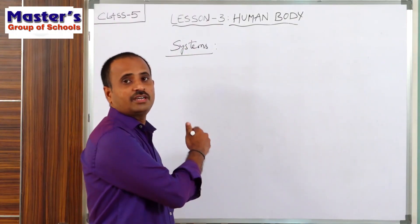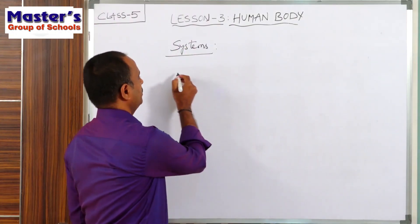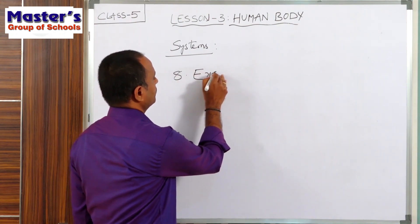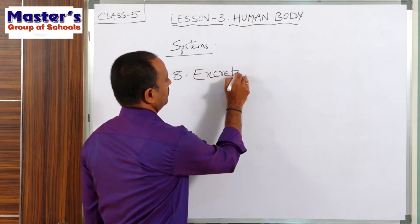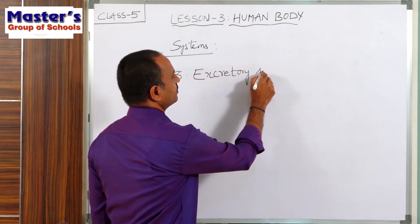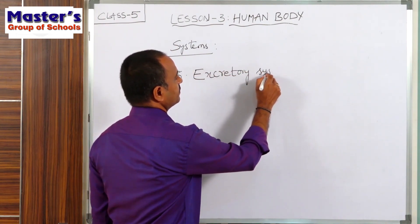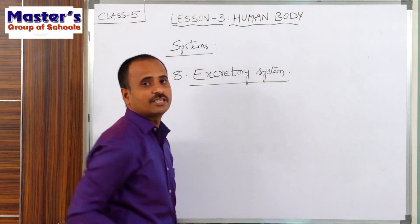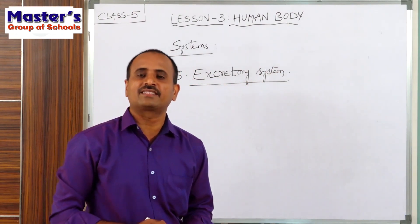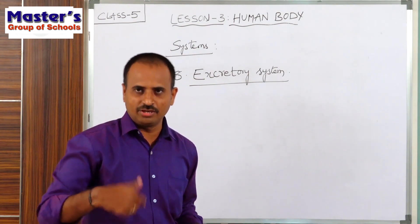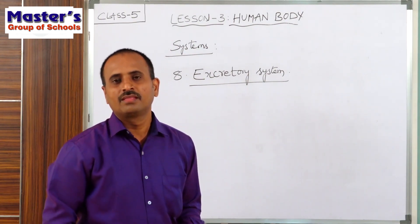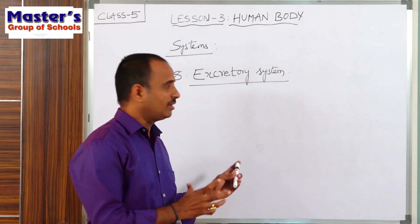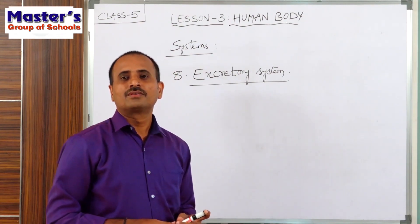Children, we will see the last system. What is the last system? The excretory system. What is the meaning of the word excretory? Excretory means releasing out, that means sending out. So that system is called excretory system.